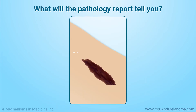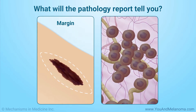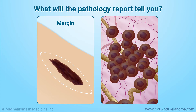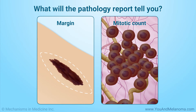How close does the tumor come to the edge of the skin sample? This is called the margin. How many cells in the skin sample are actively dividing? This is called the mitotic count, or mitotic rate. A higher number means that more cells are dividing.